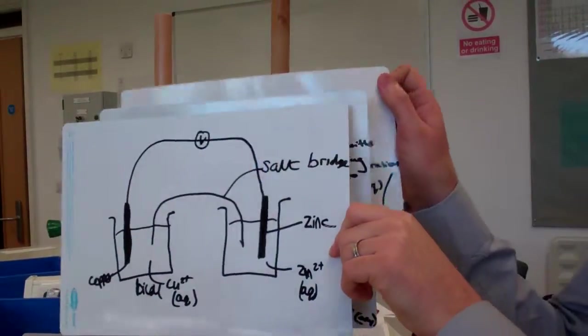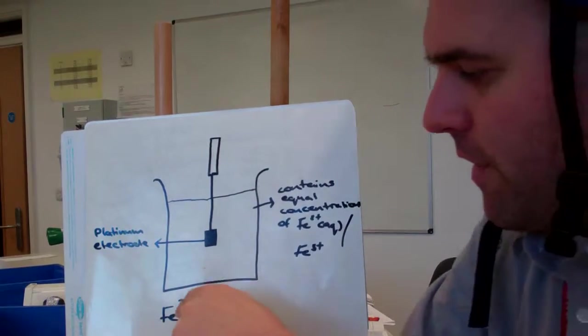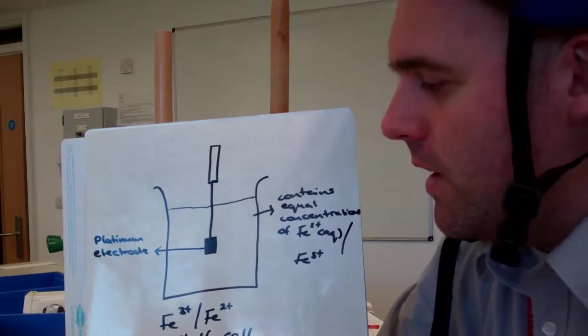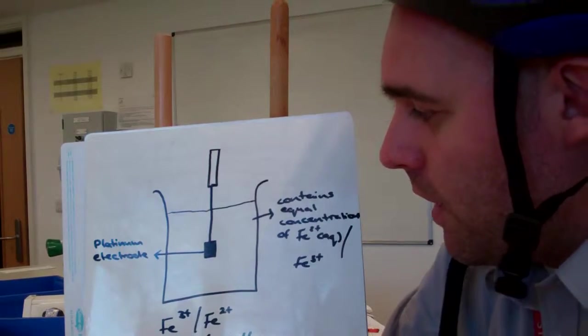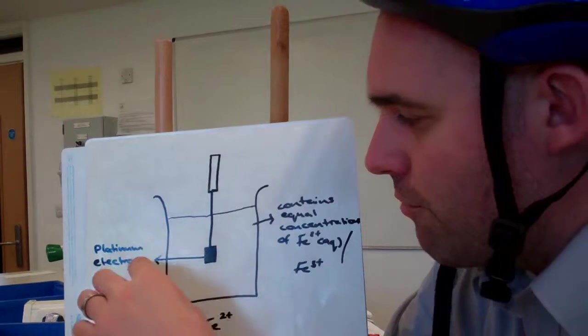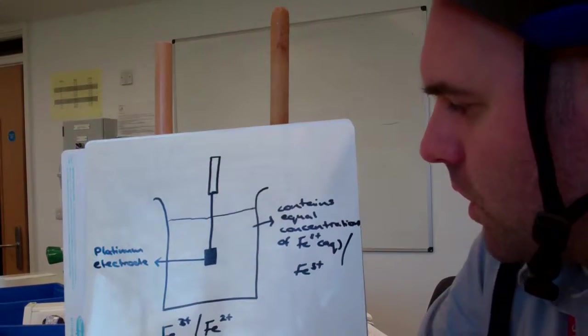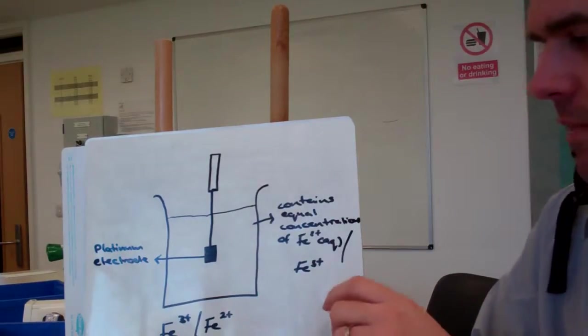So for example, here's one where we have a solution of Fe³⁺ and Fe²⁺. Okay, so the Fe³⁺/Fe²⁺ half equations here. You can't have Fe metal there because it'll confuse half equations, so instead you use an unreactive metal like platinum. Okay, and again, all the concentrations would be 1 mol per dm³.